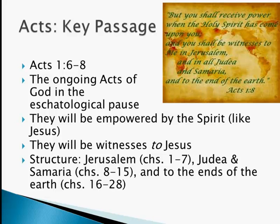To give you a little bit of a hint, Acts 1:8 gives us a clue to the structure of Acts based on geography. It mentions Jerusalem, which covers Acts chapters 1-7. The transitional area of Judea and Samaria spinning out from Jerusalem, which Acts discusses in chapters 8-15. And then it opens the floodgates to the ends of the earth, which covers Acts chapters 16-28.